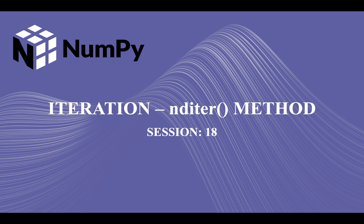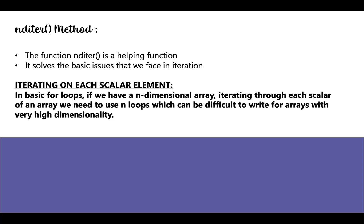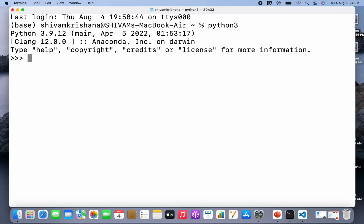Hi guys, welcome back to our course on NumPy. In our last lecture we covered the method of iterating down to scalars in higher dimensional arrays using nested loops, and today we are going to learn about the nditer method. So first of all, what is the nditer method? It is a helper function that solves the basic issues we face in iteration. In basic for loops, iterating through each scalar element of an n-dimensional array would require n loops, which can be difficult to write for arrays with very high dimensionality. So let me import numpy as np.